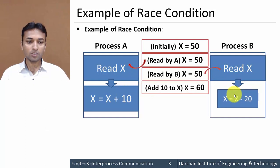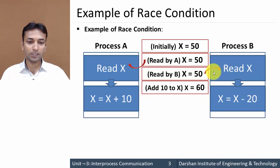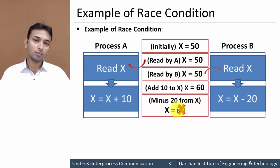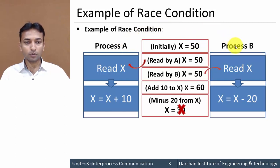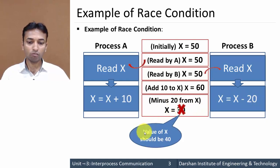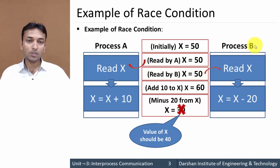Next comes process B. Process B subtracts 20 from the value of X. But process B had read the value of X as 50, so it computes 50 minus 20, which is 30. But the value 30 is wrong, because after process A ran, the value of X should be 40, not 30. We got the wrong result because of this race condition — the order in which process A and process B execute matters.